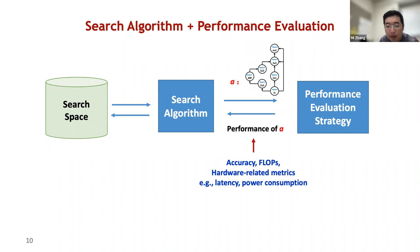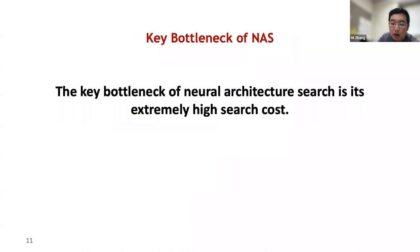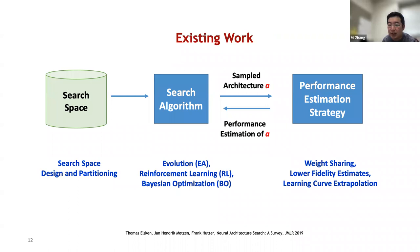The performance of architecture candidates is returned to the search algorithm as feedback so it can sample the next candidate in the next iteration. Although NAS has achieved significant performance, the search space usually contains hundreds, thousands, or even millions of architectures, making the key bottleneck of NAS its extremely high search cost. Existing works address this through search space design and partitioning, effective search algorithms such as evolution-based, reinforcement learning-based, or Bayesian optimization-based methods, or efficient performance estimation strategies such as weight sharing.